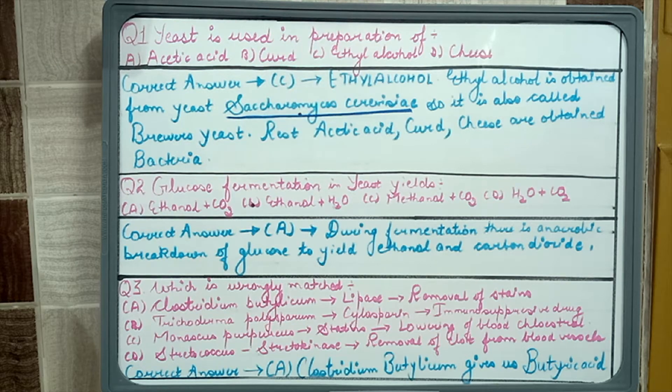Now let us look at the second question. Glucose fermentation in yeast yields: option A, ethanol plus CO2; option B, ethanol plus water; option C, methanol plus CO2; option D, H2O plus CO2. The correct option is option A, ethanol plus CO2.